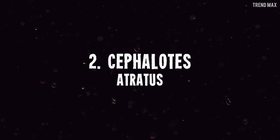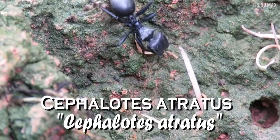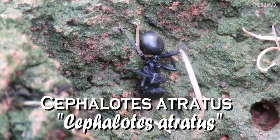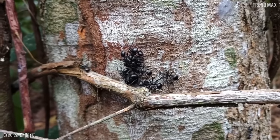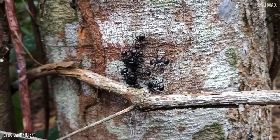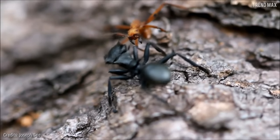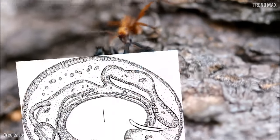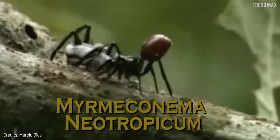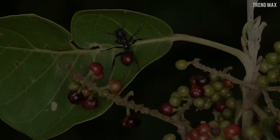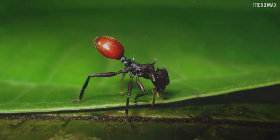Number 2: Cephalotes atratus. This ant species likes to grow fungi on chewed leaves, and it's found in Central and Southern America and parts of the Southern United States. These ants are unlucky enough to also be infected by the parasite Myrmeconoma neotropicum. When infected, the ant's abdomen turns reddish, and the longer the ant is parasitized, the redder its abdomen turns.